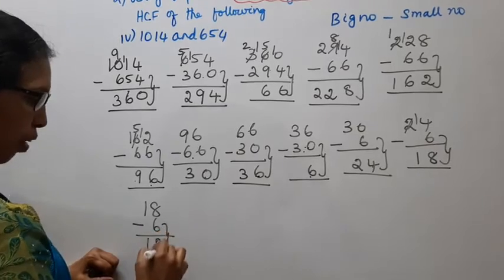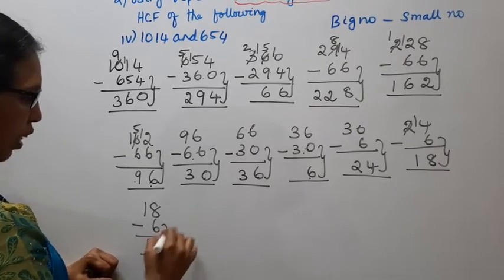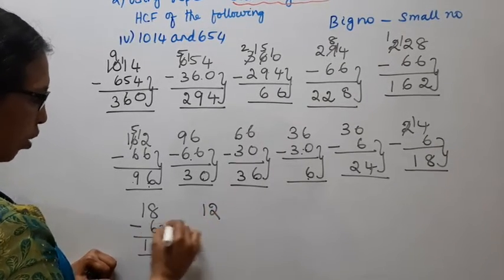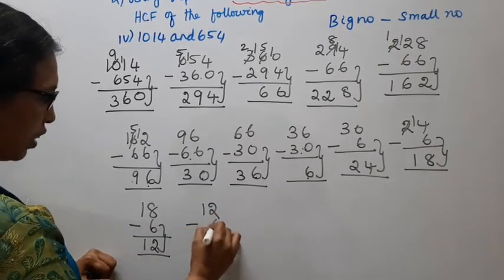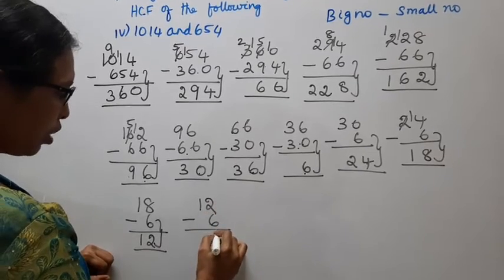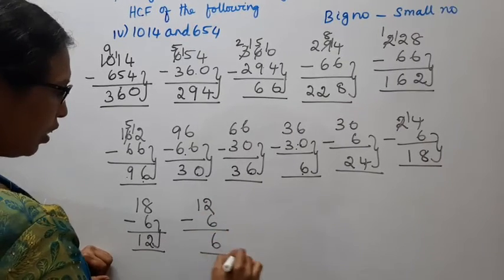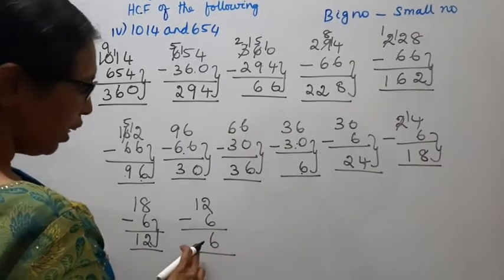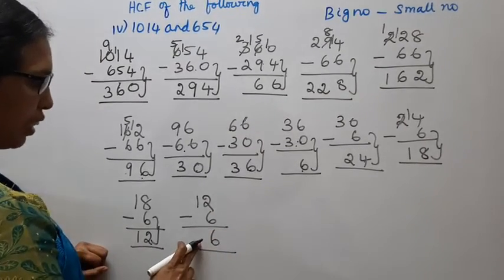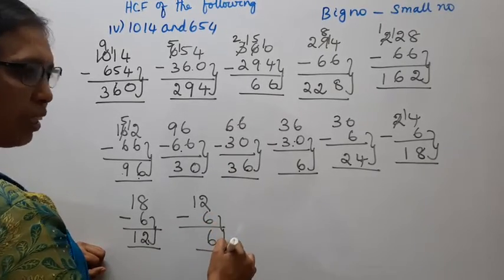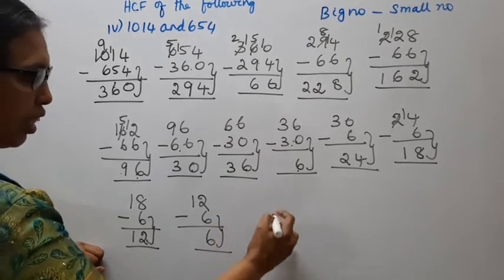12 is number 6. 6 is number 6. 6 minus 6 equals 0.